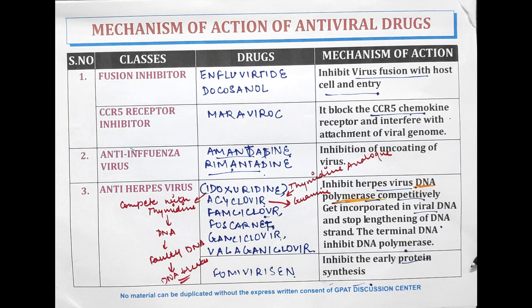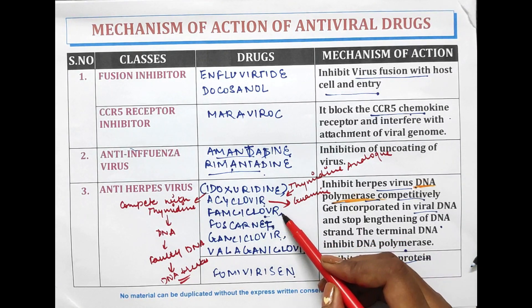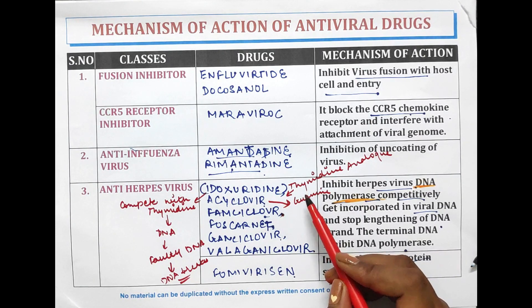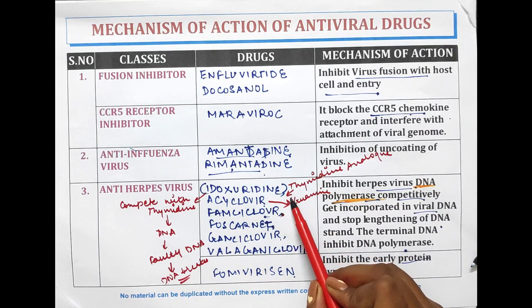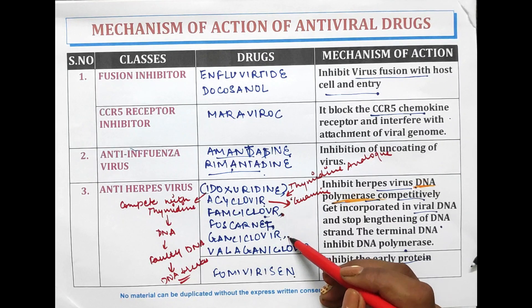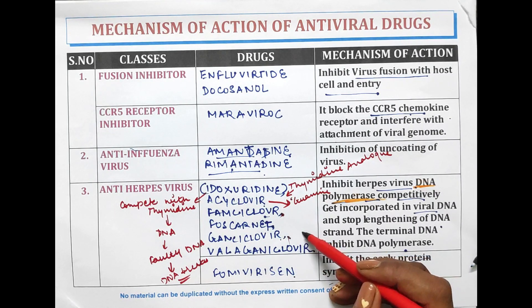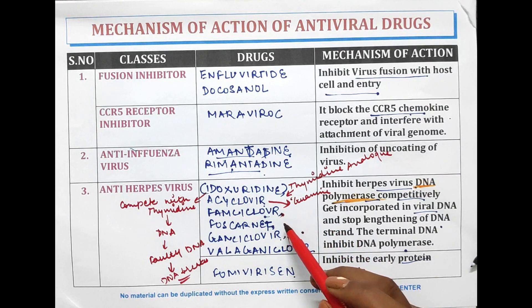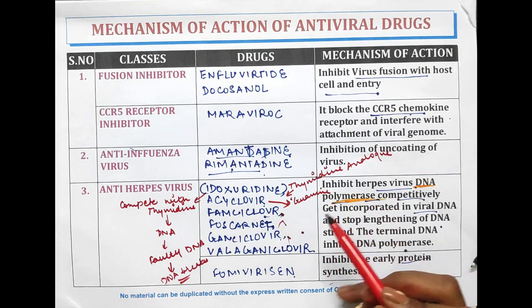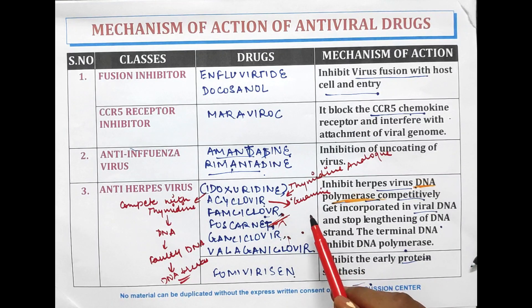This was the mechanism of action of acyclovir. Famciclovir is the ester prodrug of penciclovir. Valacyclovir is the prodrug of acyclovir. Ganciclovir is the analogue of acyclovir. The drug foscarnet inhibits the DNA polymerase and reverse transcriptase.